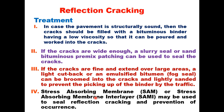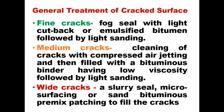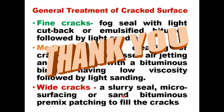As a general treatment summary for cracked bituminous pavement surfaces: fine cracks are treated by fog seal with light cutback or emulsified bitumen followed by light sanding. Medium cracks require cleaning with compressed air jetting, filling with low-viscosity bituminous binder, and spreading of light sand. Wide cracks require slurry seal, microsurfacing, sand bituminous mix, or sand bituminous premix patching to fill the cracks. Thank you very much for watching this video; you can share it with your friends and write your comments in the comment box.